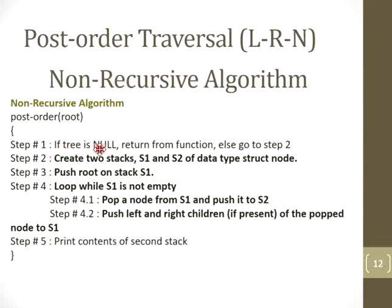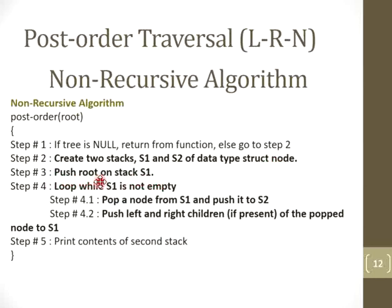This is the non-recursive algorithm where we are passing a root node. Step one: if my tree is empty, there is no need to traverse it — we return from the function to the calling function. After this, going to step two by considering the tree is not empty, we are supposed to create two stacks — stack one and stack two — of the data type structure node, because in both stacks we are going to push and pop nodes of the tree. Then the next step is to push the root node onto the stack, and then perform the following steps while the condition is true: while S1 is not empty, perform both steps continuously.